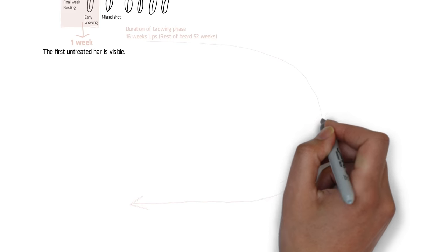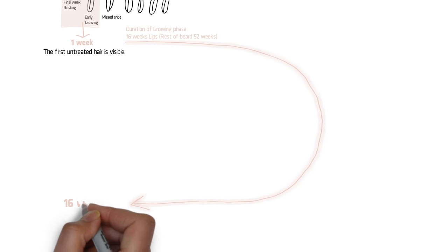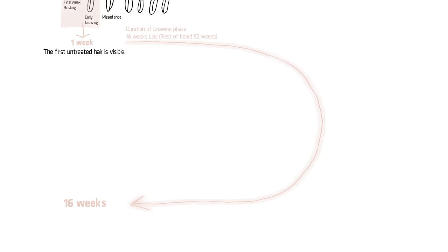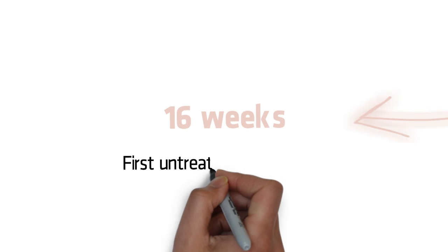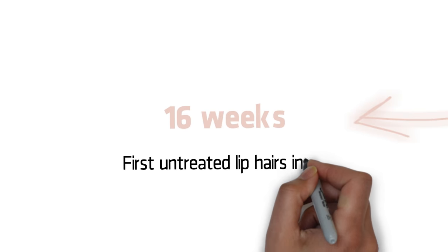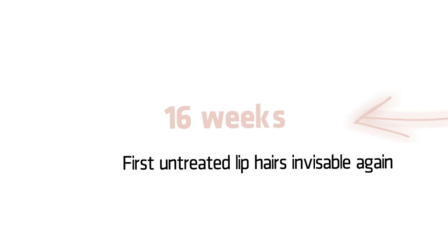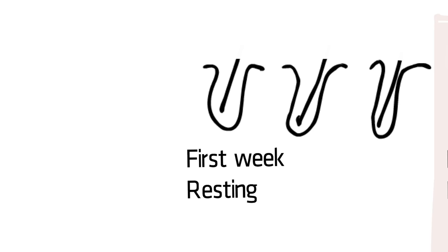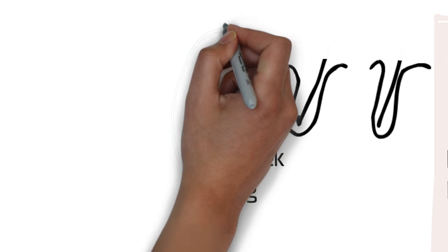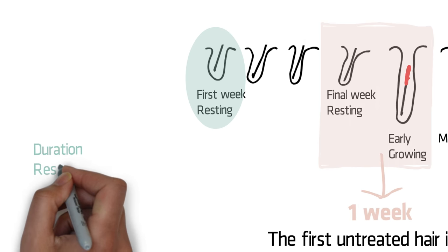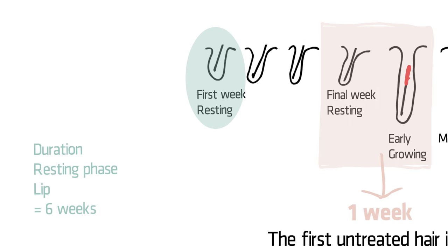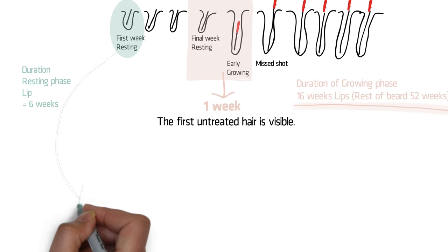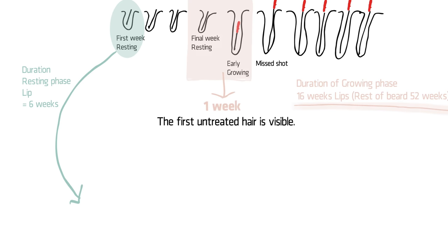This hair will keep growing for 16 weeks on the lip and 52 weeks on the rest of the face. So, 16 weeks after treatment, the first untreated lip hair starts to disappear again. Now let's look at what happens with the hair on the other extreme. Hair 1 started resting the day of the shave. If hair 1 is a lip hair, she will be in rest for 6 weeks before appearing on the lip.